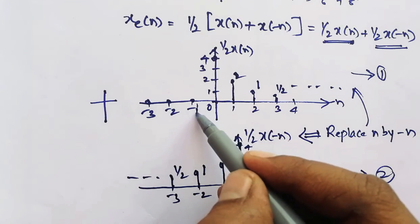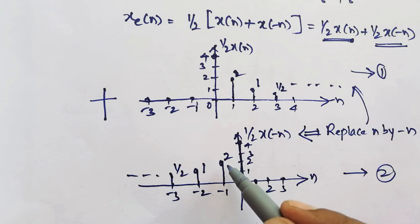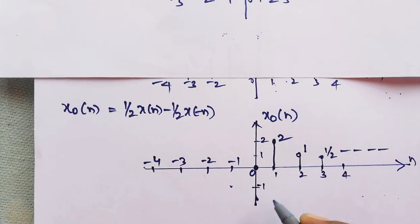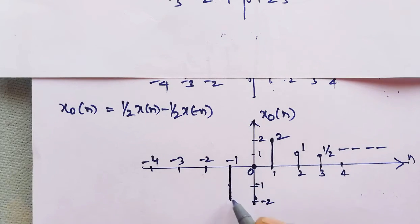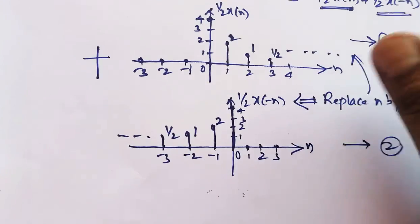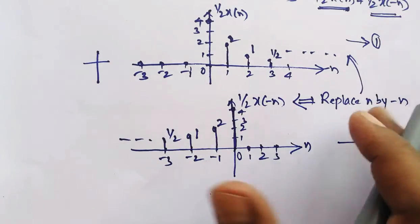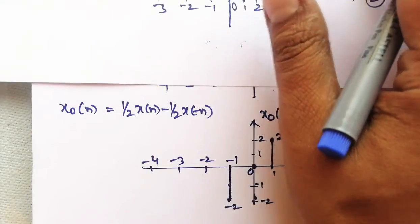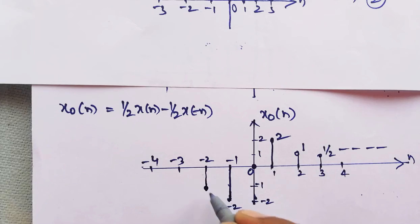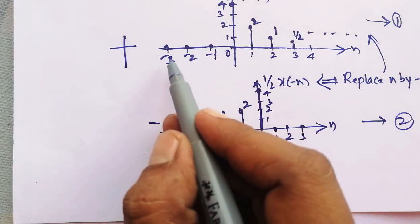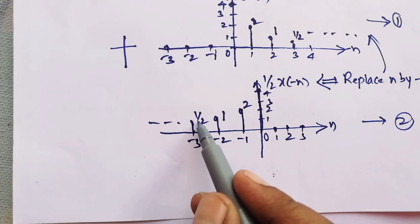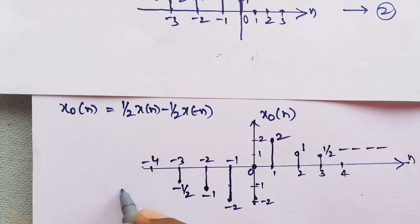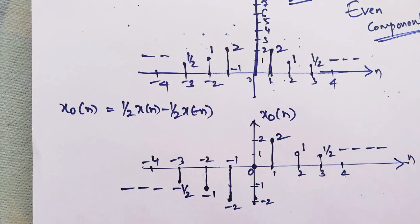For the negative part: at n equal to minus 1, it is 0 minus 2, giving minus 2. At n equal to minus 2, it is 0 minus 1, giving minus 1. At n equal to minus 3, it is 0 minus 1 by 2, giving minus 1 by 2, and it goes on. This is the odd component of the signal.